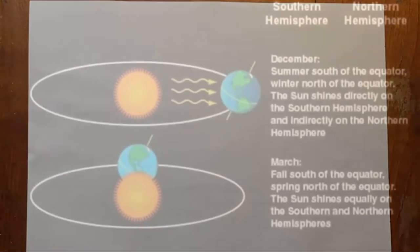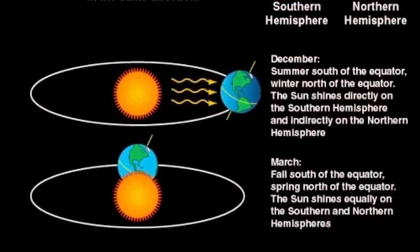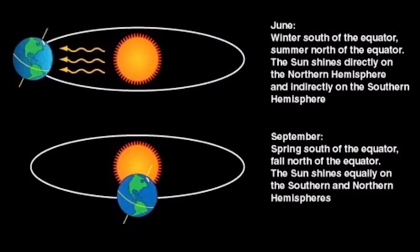Why do the seasons change? Well, this is because the Earth is tilted on an axis as it orbits around the sun. This means that the seasons are dependent on what section of the Earth is facing the sun as it orbits. This also means that the Earth is divided into hemispheres, the southern and the northern hemisphere. The seasons will be different in each hemisphere because of the Earth's axis. An example of this is in the southern hemisphere where it could be summer, and in the northern hemisphere it would be winter.